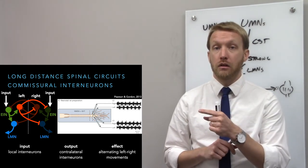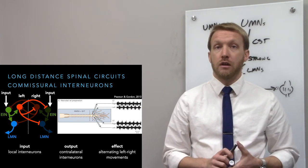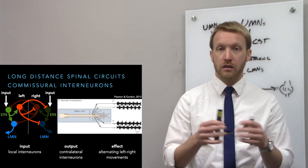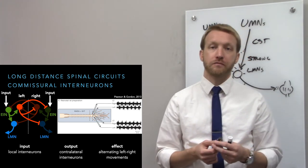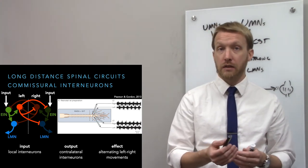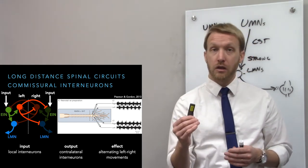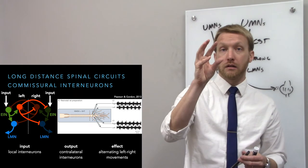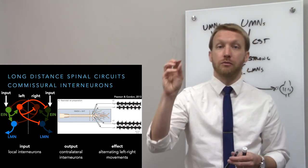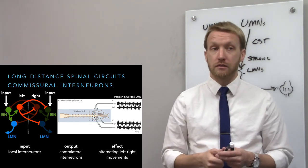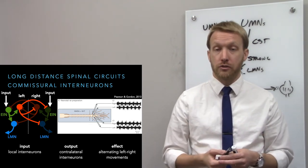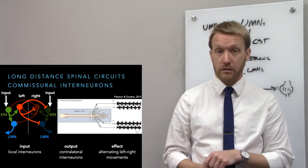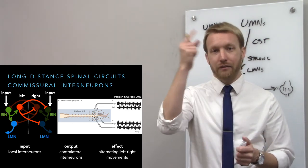Data from a neonatal rat spinal cord confirms this — recording at L2 and L3 on both sides, we see a burst on the right, then the left, then the right, then the left: alternating left-right movements. That is locomotion — your left and right sides doing opposite things, coordinated without having to think about it. Commissural interneurons allow both sides to be coordinated; let the spinal cord figure it out.